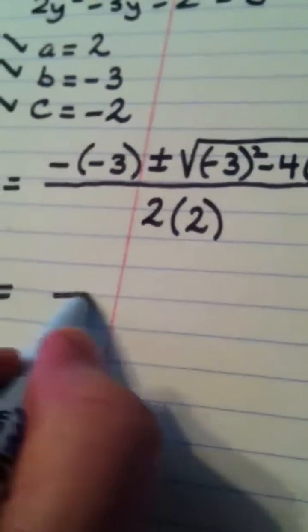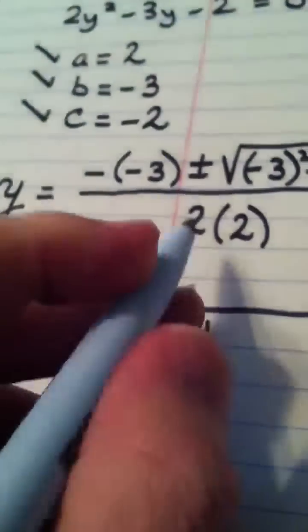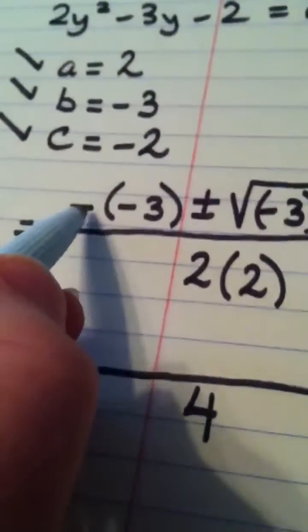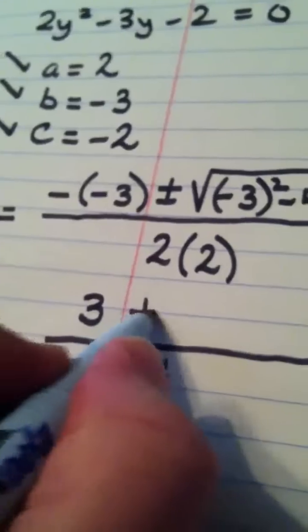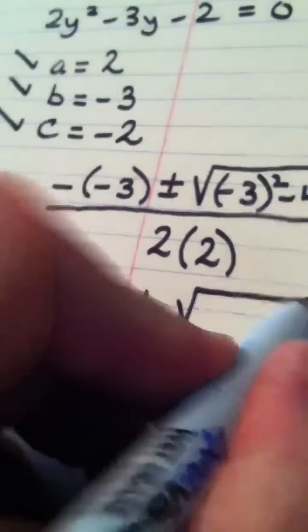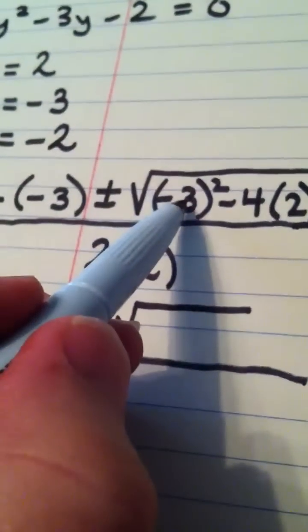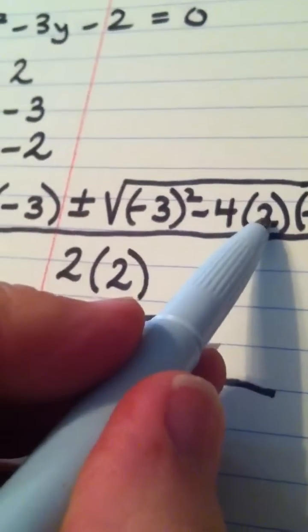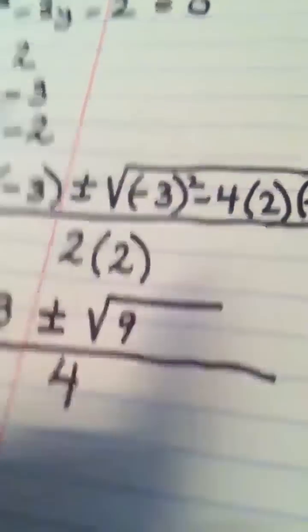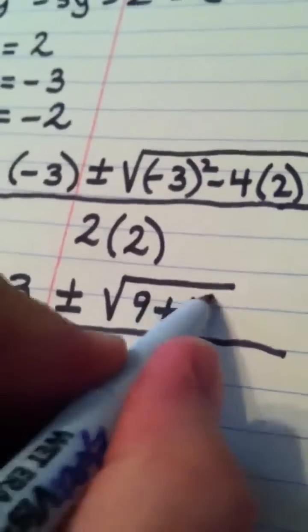Y equals, we have a long division bar, 4 is on the bottom because that's 2 times 2. Opposite of negative 3 is a positive 3, plus or minus the square root of negative 3 quantity squared is 9. Negative 4 times 2 is negative 8 times negative 2 is a positive 16.